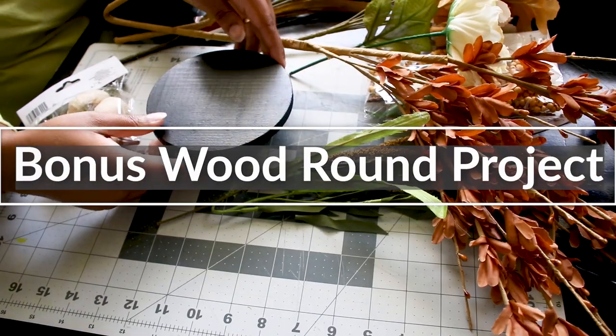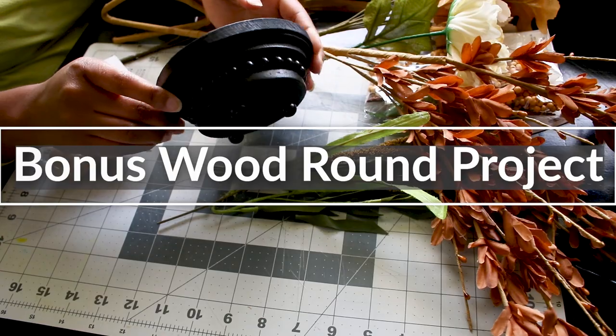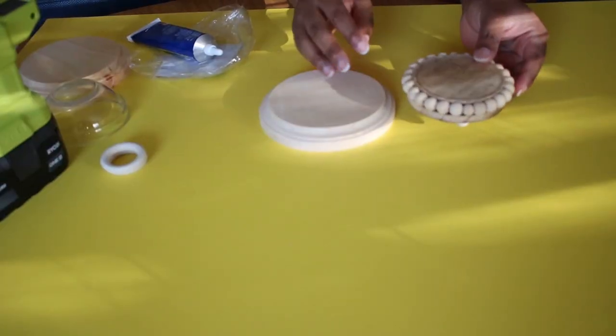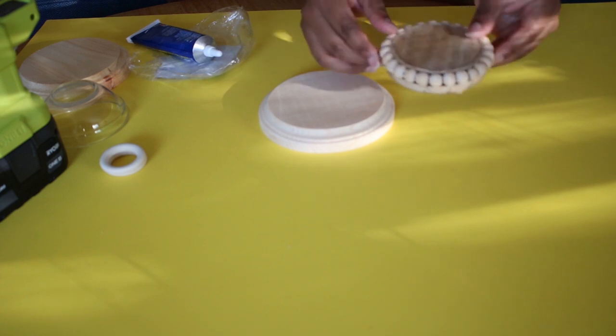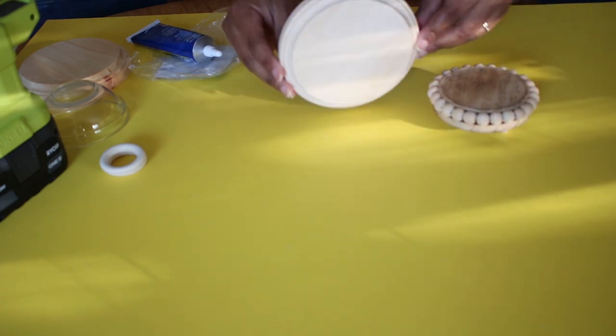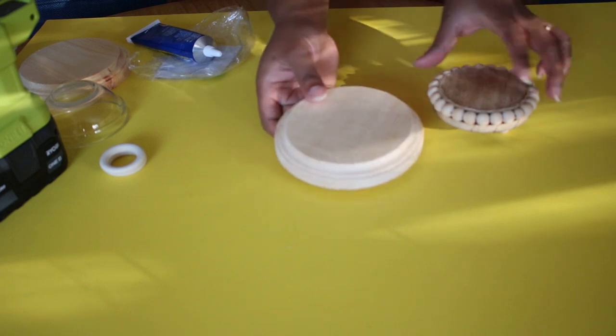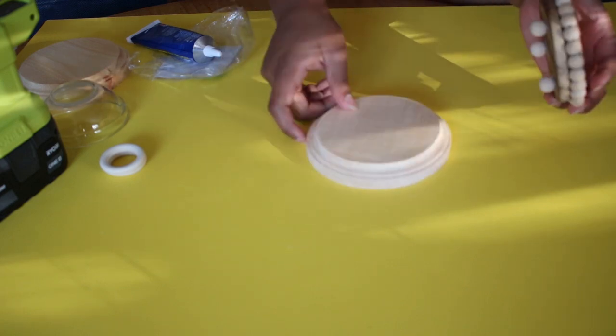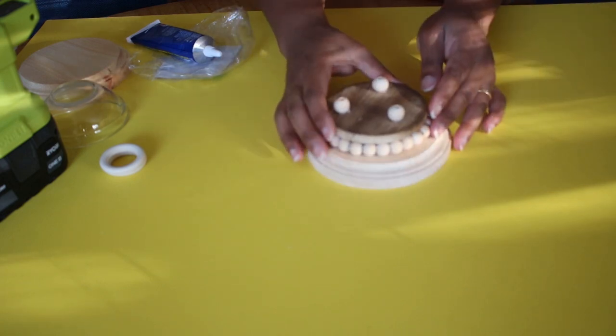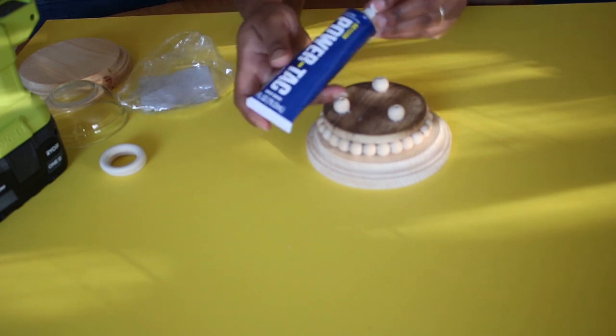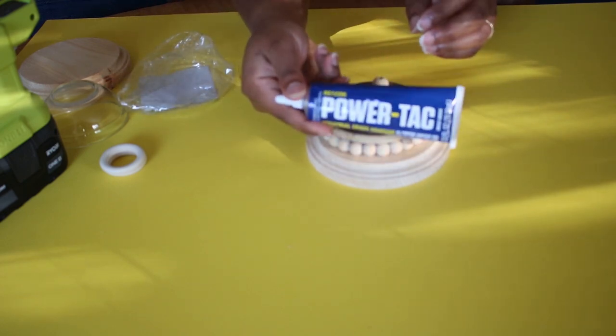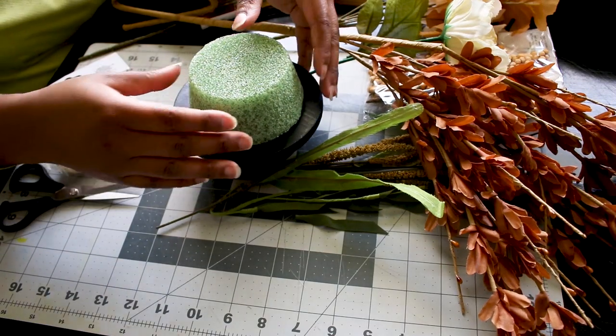This last project is not really a Dollar Tree hack, but I am using some Dollar Tree florals, and I think you can create this using some Dollar Tree products. Now, this is the second wood round in that two-pack, and an older one of my upcycle projects, which I took and just glued onto the bottom, or the top, really, using that PowerTac glue once again.